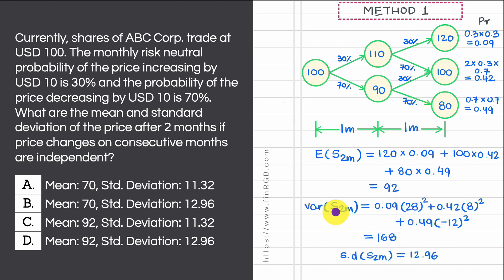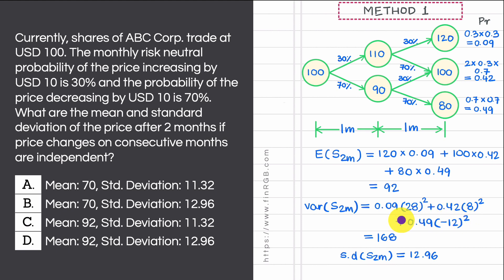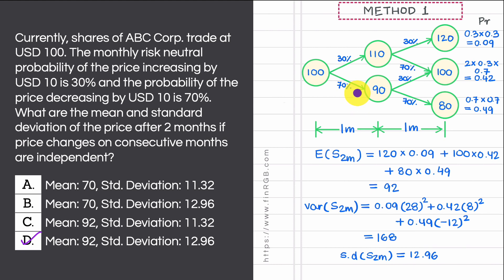Applying this formula to S2m: Var(S2m) = 0.09 × (120 − 92)² + 0.42 × (100 − 92)² + 0.49 × (80 − 92)² = 0.09 × 28² + 0.42 × 8² + 0.49 × (−12)² = 168. The standard deviation of S2m is √168 ≈ 12.96, confirming that the correct answer is D.